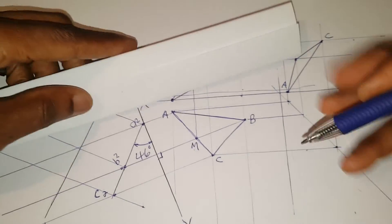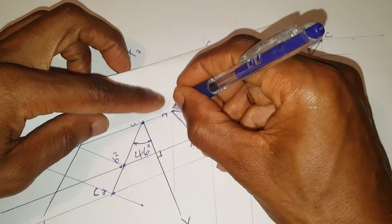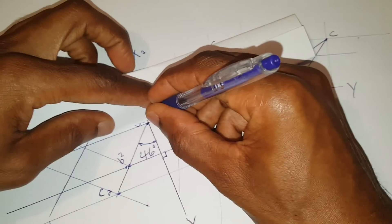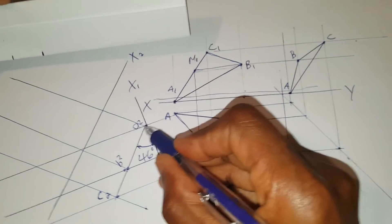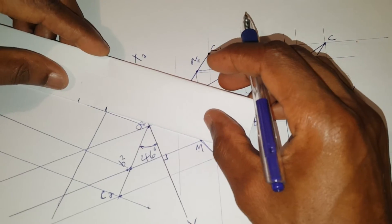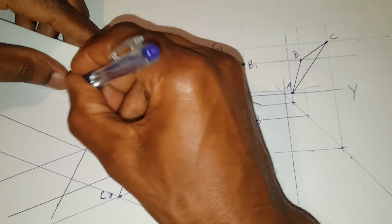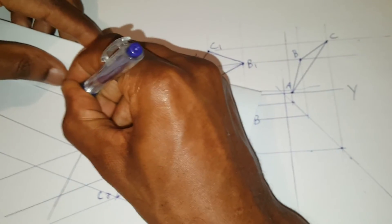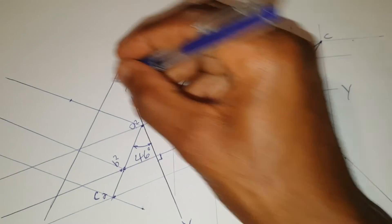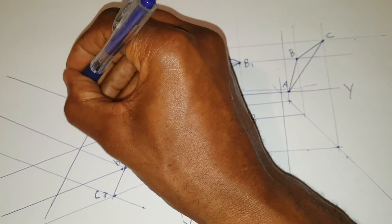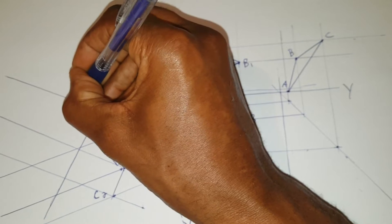So first I start with A. I transfer A onto the corresponding A line here. This is now A3.